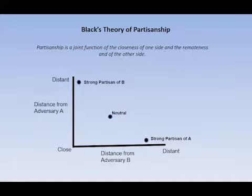The relevant theory is that partisanship is a joint function of closeness to one side and distance from the other side — both variables matter. If you're close to both sides, you're probably going to be relatively neutral. If you're distant from both sides, you're probably going to be relatively neutral. But if you're much closer to one than the other, you're more likely to take sides. Partisanship becomes more likely when there's this imbalance in distance, and it becomes more likely to be strong. Remember, partisanship is a matter of degree.